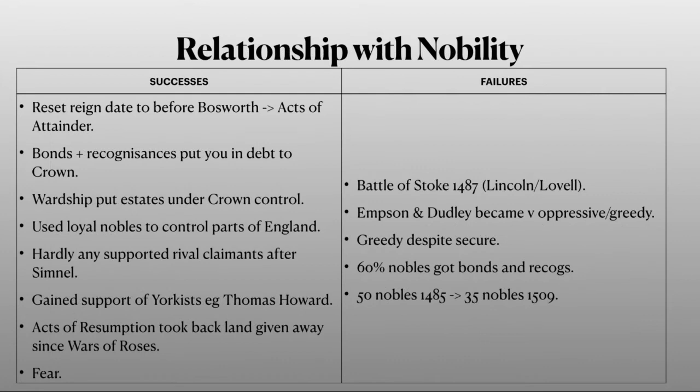Moving on to Henry VII's relationship with the nobility. For successes: he reset his reign date to the day before the Battle of Bosworth so that he could use acts of attainder to arrest anybody who fought against him at the battle as traitors. He used bonds and recognisances to put nobles personally in debt to the crown, keeping them under financial control. He used wardship to take over estates and control them by the crown, and he employed loyal nobles he trusted to control important parts of England.